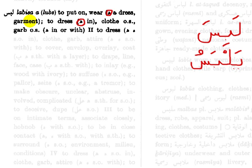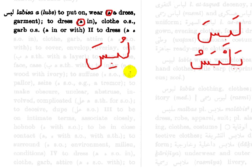It's a transitive verb — in other words, we can have the passive form for labisa and for yalbasu. So for example, let's make this into the passive. We put the lam, the ba, and then the sin — it would be lu-bi-sa: 'it was worn.' So lubisa thawb — the garment was worn; who wore it is not mentioned.